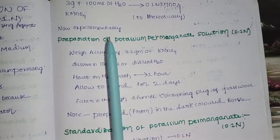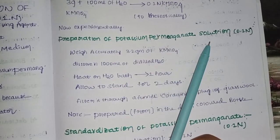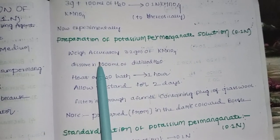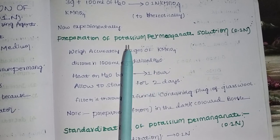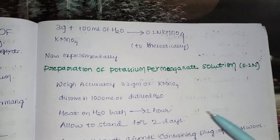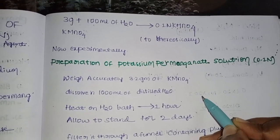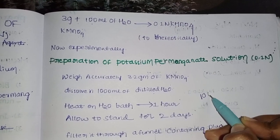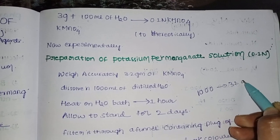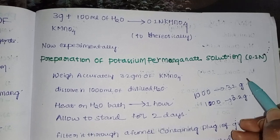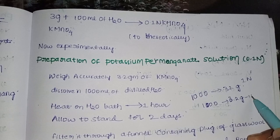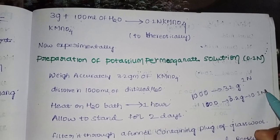For the preparation of potassium permanganate solution 0.1 normal: weigh accurately 3.2 grams of KMnO4. The calculation basis is: 1 normal in 1000 ml requires 32 grams, so 0.1 normal in 1000 ml requires 3.2 grams of KMnO4.